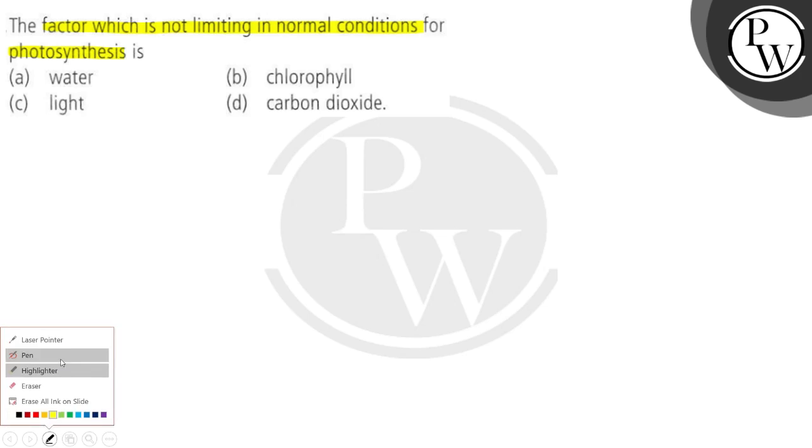So we're asked which factor will not be a limiting factor in normal conditions during photosynthesis. Here we're talking about the normal condition.